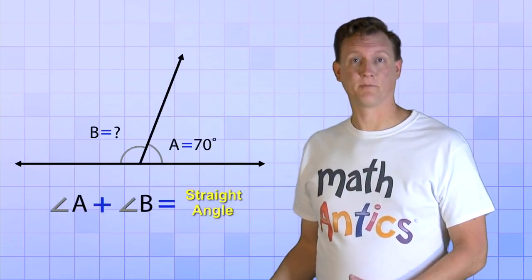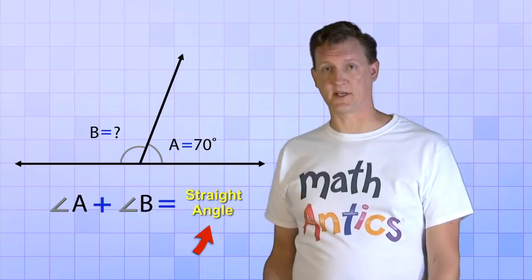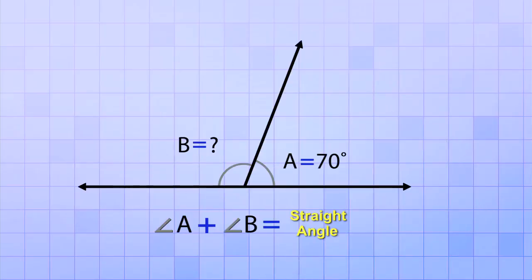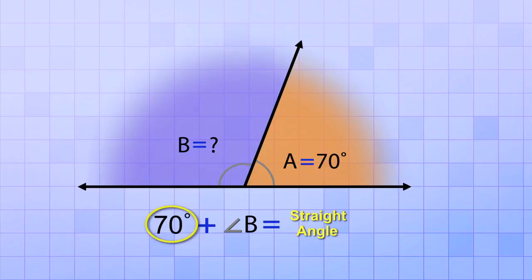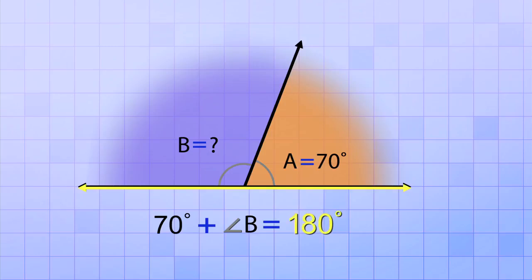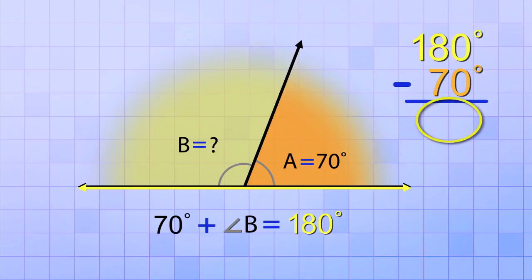Now let's try this problem. It uses the same idea, but with the straight angle this time. The straight angle is divided into two smaller angles. Again, angle A and angle B. And again, the problem tells us that angle A is 70 degrees and it wants us to figure out what angle B is. Well, we know that the total of both angles must be 180 degrees because we just learned that that's how big a straight angle is. So if we take that total, 180 degrees, and subtract angle A, which is 70 degrees, whatever is left over after subtracting must be angle B. So 180 minus 70 equals 110.